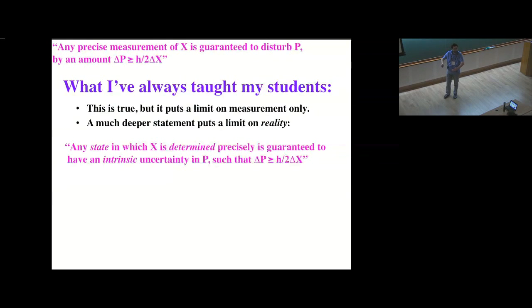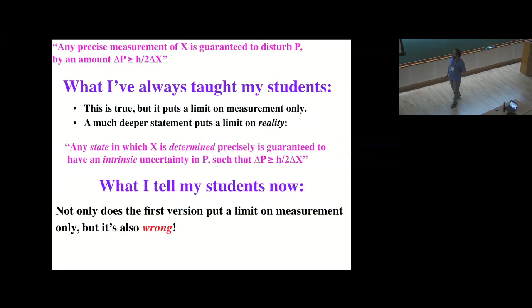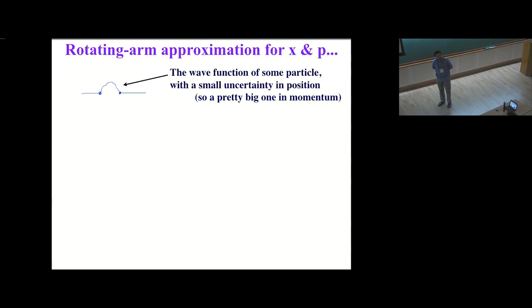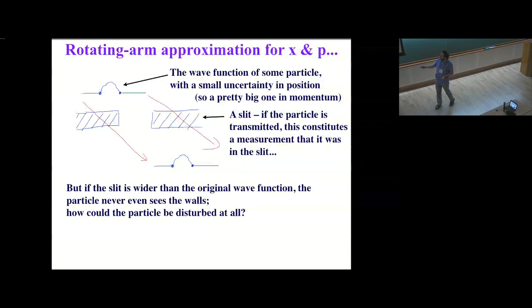Any state in which x is determined precisely already has this intrinsic uncertainty. It's not just that my measurement disturbs the system. It's that the state does not know x and p. That's what's really interesting. Well, I still believe that, but after this work I'm about to tell you about, I've realized that my initial statement is not even true. That it is not correct that a precise measurement of x is guaranteed to lead to that disturbance. So let me give you a hand-waving picture for this. There are better, more mathematical pictures, but this one I think is simple to understand. Imagine the wave function of some particle that is prepared so that at a certain time it has compact support. It's zero outside of these two dots, only exists in this certain finite region.